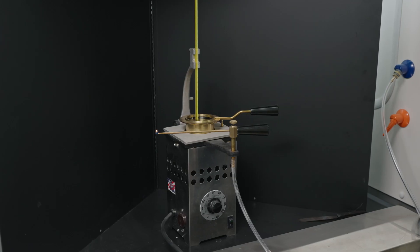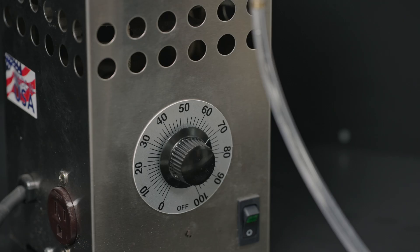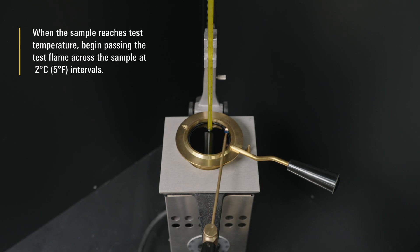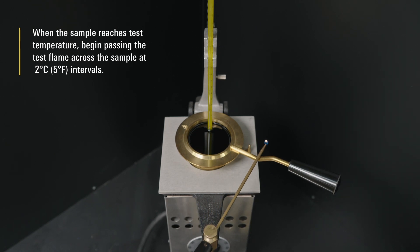Heat the sample at the rate specified in the test procedure. When the sample reaches test temperature, begin passing the test flame across the sample at 2 ºC intervals.